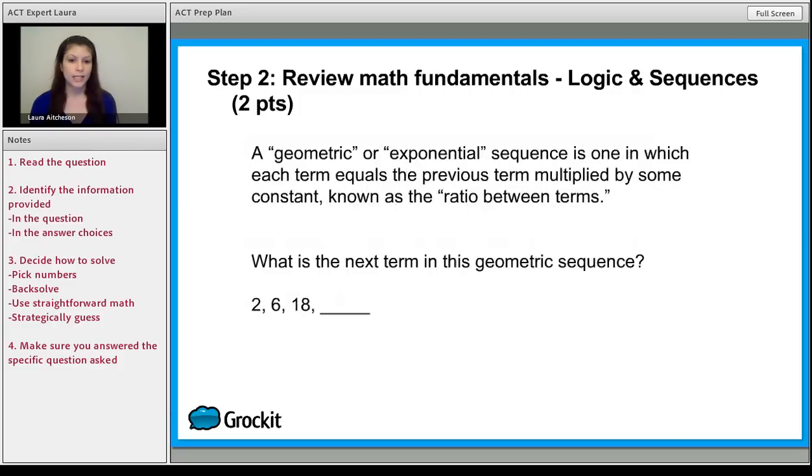Now, for the next one, we're not adding because if we were to add, we would get 2, 6, 10, 14. That's not what's happening. Here, we're multiplying by 3, so the next one would be 54.